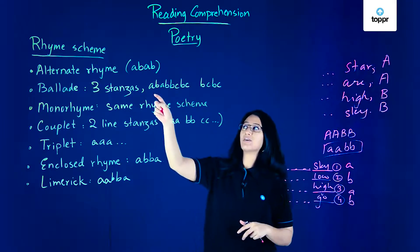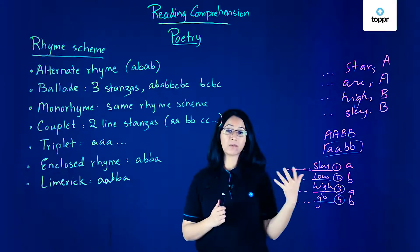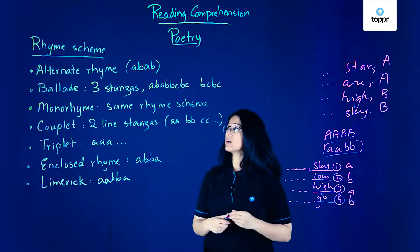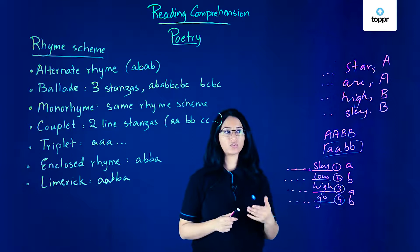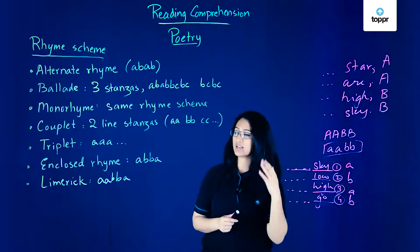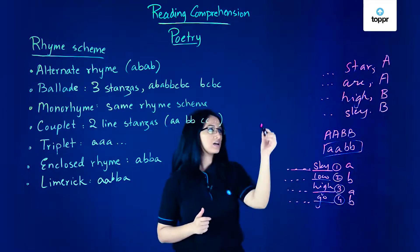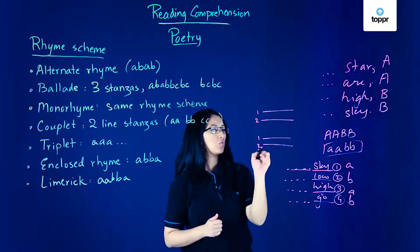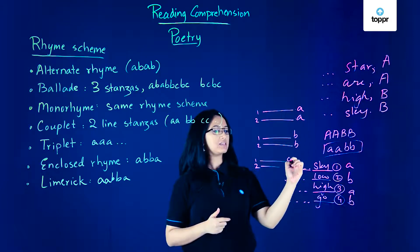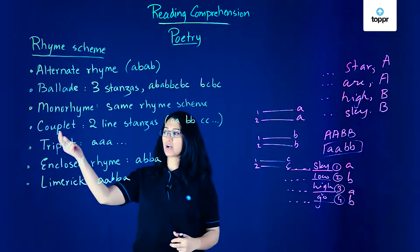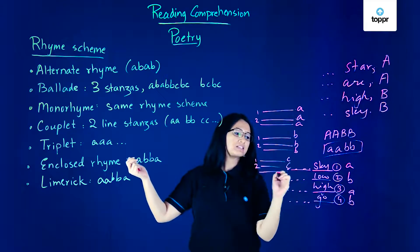The ballad rhyme scheme is ABABB CBCB. A monorhyme has all lines ending with rhyming words — every single line rhymes with the next, giving a continuous AAAAA scheme. A couplet is a two-line stanza, so each stanza has just two lines with a rhyme scheme of AA, BB, CC, and so on. A triplet is similar to a couplet but with sets of three — AAA, then BBB, then CCC.